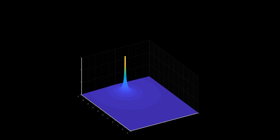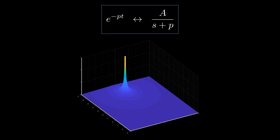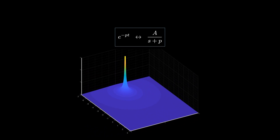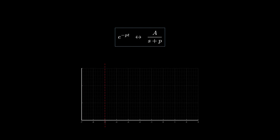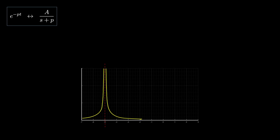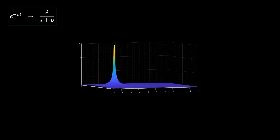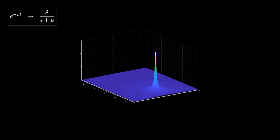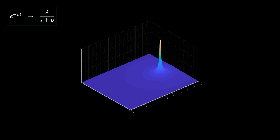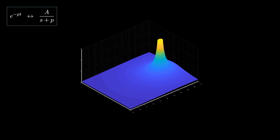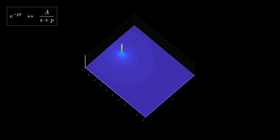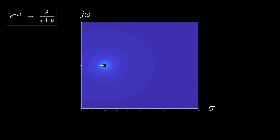This is what we expect, because the Laplace transform of an exponential function is 1 over s minus p, where p is the exponent coefficient — it's a shifted rational function. Because S is composed of two variables, the Laplace transform of an exponential function is a rational function of two variables, sigma and j omega — a rational surface. You can think of it as a rational function revolved around its vertical asymptote, where the constant A controls the strength of the curvature. So each pole represents a single exponential function with exponent equal to the location of the pole in the S plane.